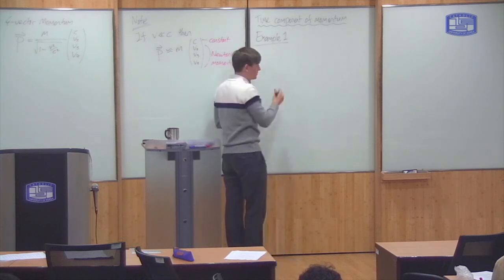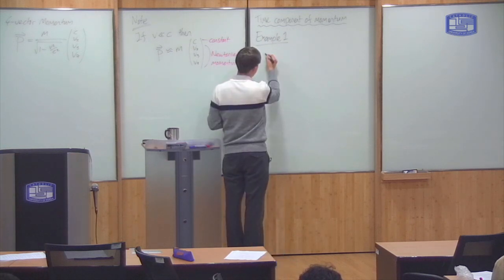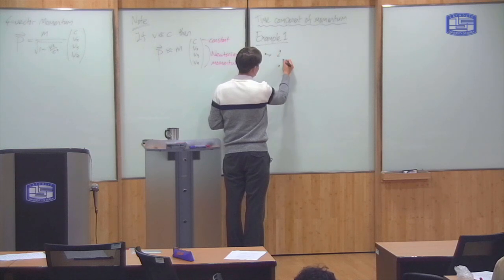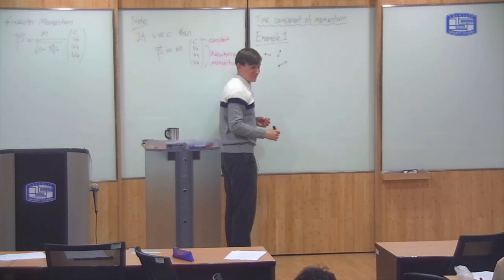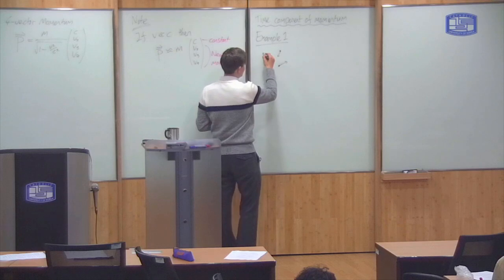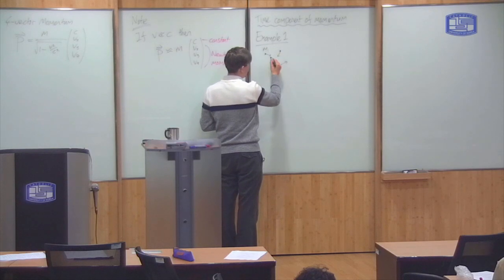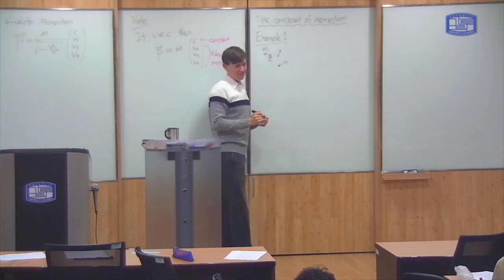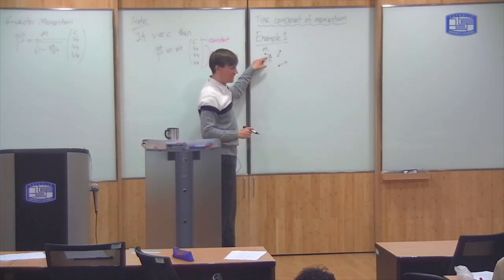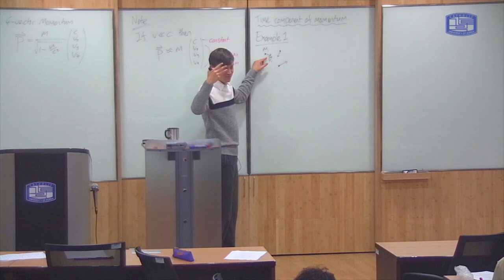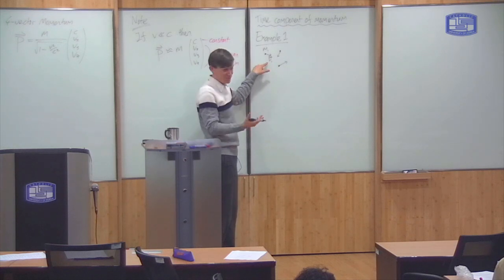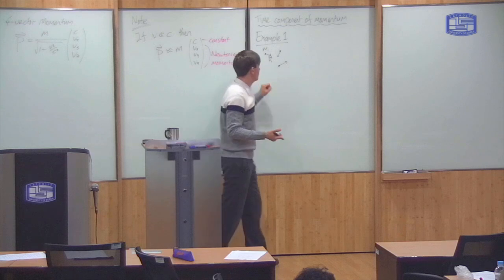For the first example, I'm going to consider a system of particles — I'll only draw three, but it can be more than three — which have certain masses Mi and some speed Vi. Here Vi with a single arrow means it's a three-dimensional velocity, the normal velocity Vx, Vy, Vz, not the four-vector.